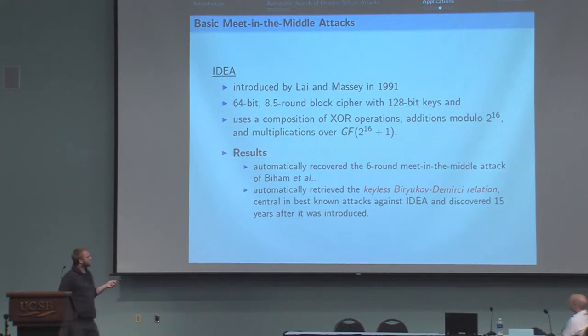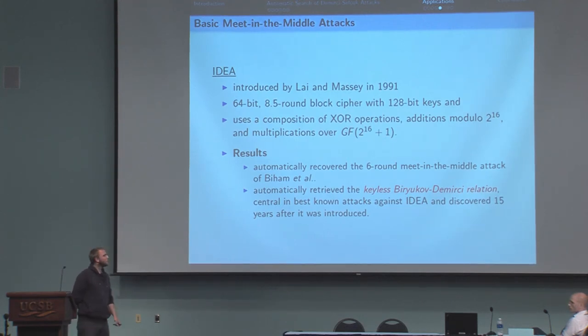As a result, we automatically rediscovered the six-round meet-in-the-middle attacks of Biham et al. And in particular, we also retrieved the keyless Biryukov-Demirci relation, which is an equation involving some plaintext, intermediate state, and ciphertext variables, which is central in the best-known attack against IDEA and was discovered only 15 years after IDEA was introduced. Again, it shows how useful our tool can be.